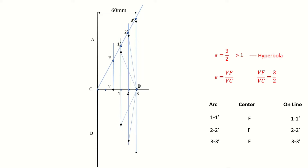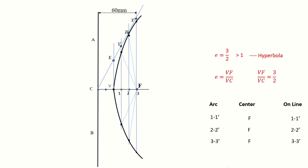Once you get all these points, draw a smooth curve passing through all of them. This curve is called the hyperbola. Now it's time to draw a normal and tangent to the curve through any random point on it.